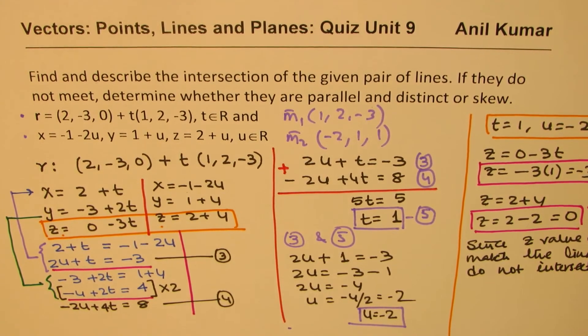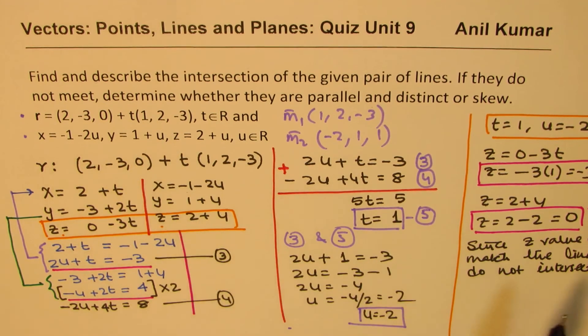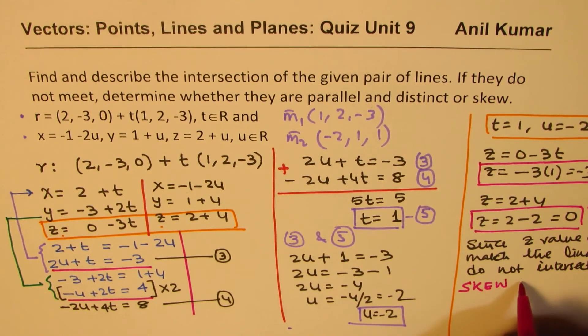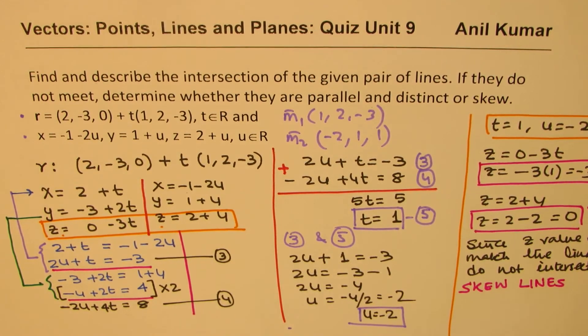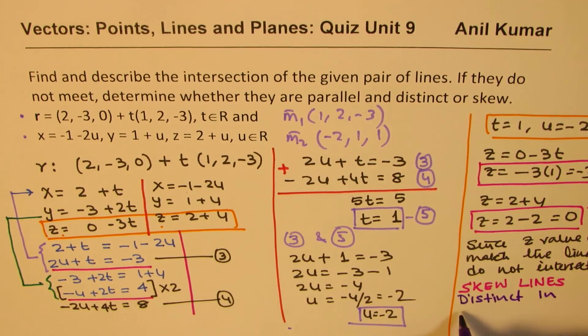Now, the idea here is that the lines are not parallel, right? They don't intersect. That means what? That means they are skew lines. So skew lines are distinct in parallel planes.